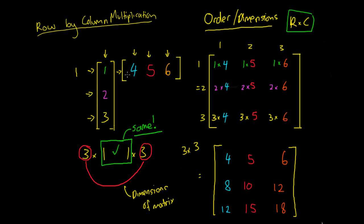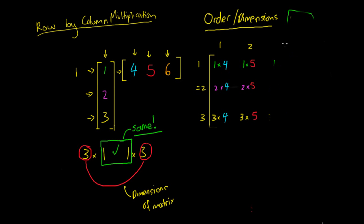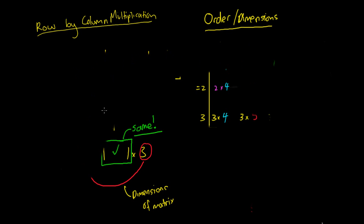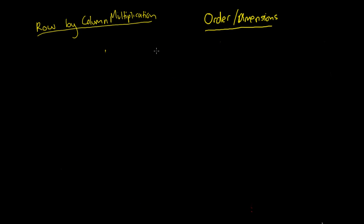Hopefully the colours make it fairly easy to follow along. That's our multiplication process — rows by columns. Now let's have a look at another example so it becomes a little bit more clear. We've got another matrix we want to multiply. This time we're going to use the numbers negative two and negative three in our first matrix, and positive three and positive six in our second matrix.